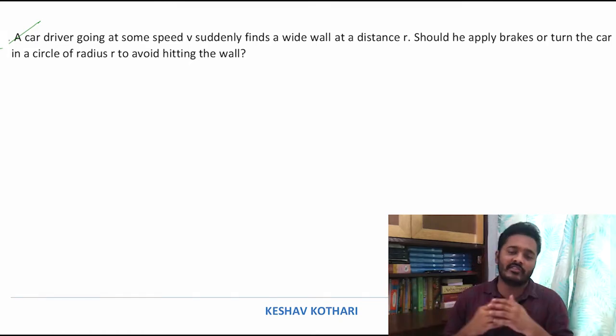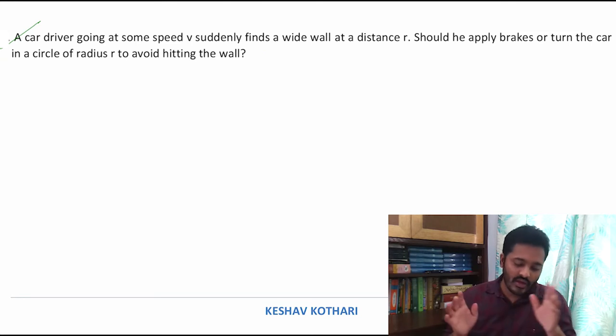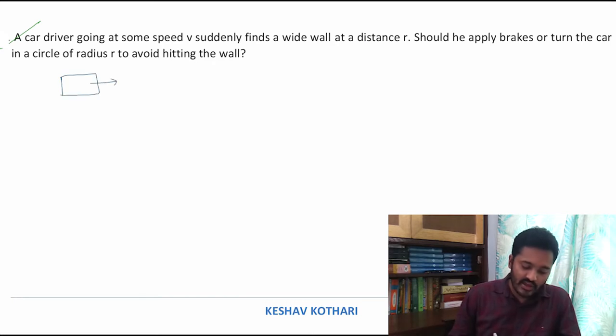Let us understand it in a numerical way. If we consider a car moving at speed v, and suppose at a distance r it is encountering a vertical wall or cliff.